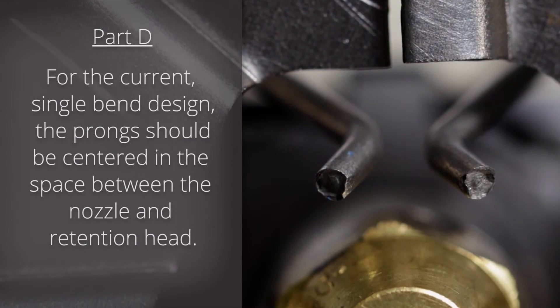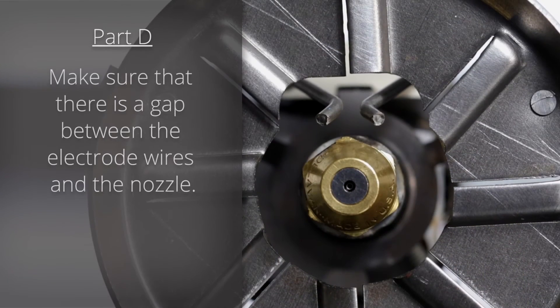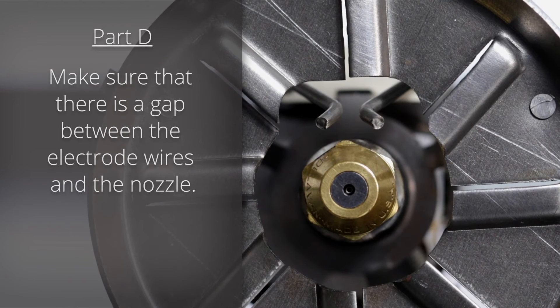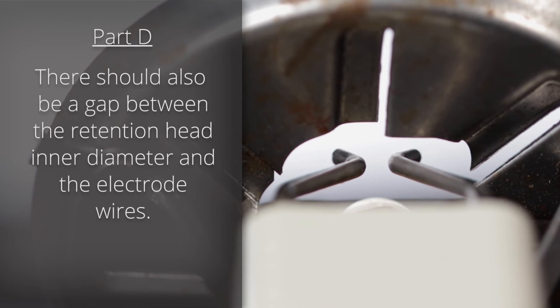For the current single-bend design, the prong should be centered in the space between the nozzle and retention head. Make sure that there is a gap between the electrode wires and the nozzle. There should also be a gap between the retention head inner diameter and the electrode wires.